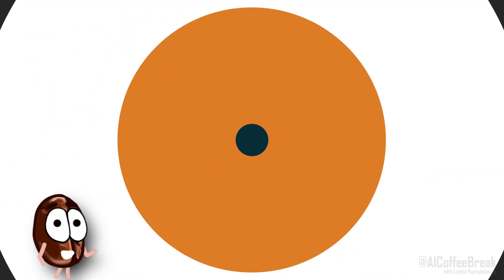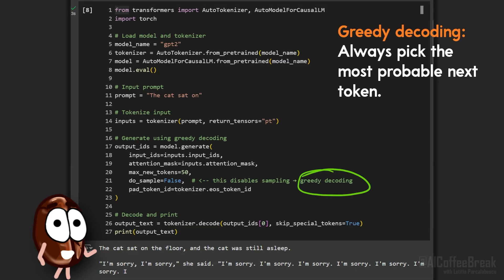That's exactly what sampling allows. Instead of always choosing the top token, sampling lets the model occasionally pick a slightly less likely but still reasonable option. This adds just enough uncertainty to keep things dynamic, diverse, and engaging. Depending on how you sample, you can control this balance, making the output more creative or more consistent. That trade-off between control and creativity is so important that, as you'll see in the next code examples, simply switching the decoding strategy can make even an older model like GPT-2 sound much more interesting without changing the model itself. All we'll do is turn on sampling.